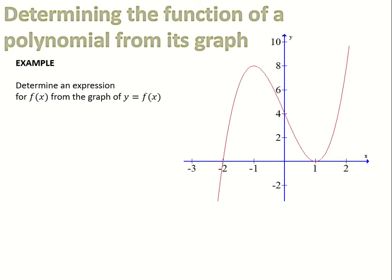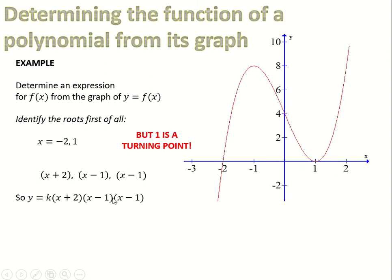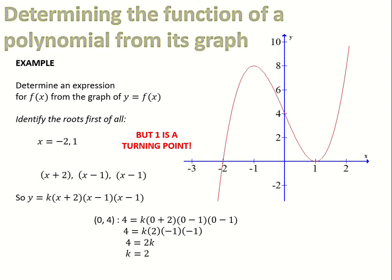In a similar example, we have another graph and want to determine its equation. We start with the roots, but we must be very careful because there is a turning point on the x-axis. That means there is a repeated root. The roots appear to be minus 2 and 1, but since positive 1 is a turning point, it is a repeated root. So we have x plus 2, x minus 1, x minus 1. Using the y-intercept point (0, 4): substituting in gives 2 times 1 times 1 equals 2k, so 4 equals 2k and k equals 2. The equation is f of x equals 2 times x plus 2, x minus 1, x minus 1.